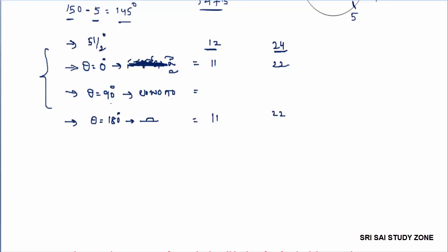Theta equals 90 degrees means the hands are at a right angle — this happens 22 times in 12 hours and 44 times in 24 hours. We need to check the clock carefully here, taking 11 to 21 times. At certain times it doesn't matter how long; we just check the clock for each case.